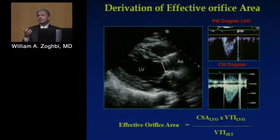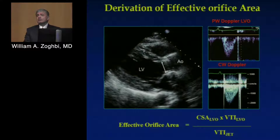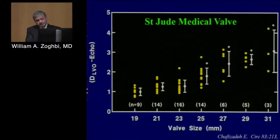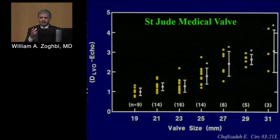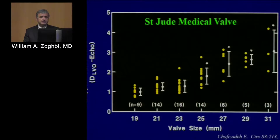That's the reason to have another index that incorporates flow in addition to maximal velocity and gradient. One way is to calculate an effective orifice area of the valve, similar to what you do with aortic stenosis. From that same cohort, this is much tighter than what you saw before — still some heterogeneity even accounting for flow, but as expected, a larger valve size yields a larger effective orifice area. This is for a bi-leaflet prosthesis.